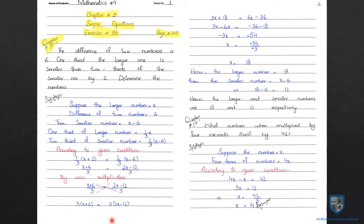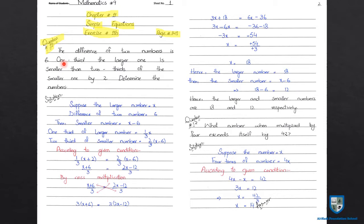The difference of two numbers is 6. One third of the larger one is smaller than two thirds of the smaller one by two. One third part of the larger number is smaller than two thirds of the smaller one. Determine the numbers.